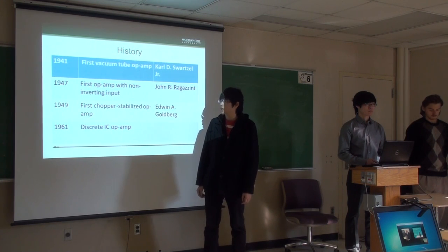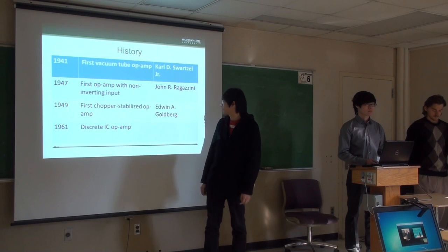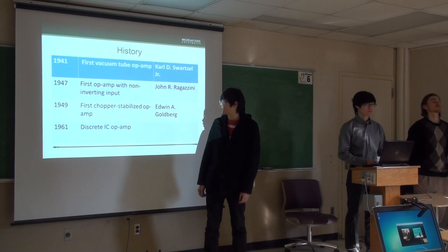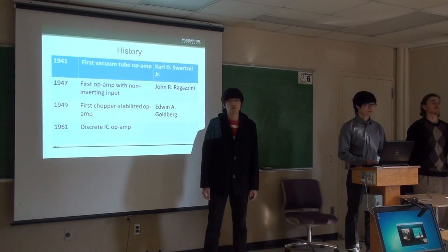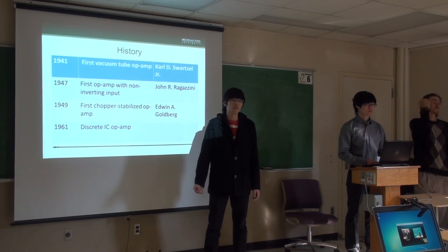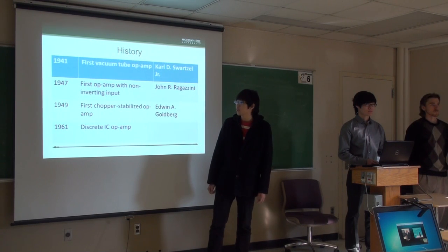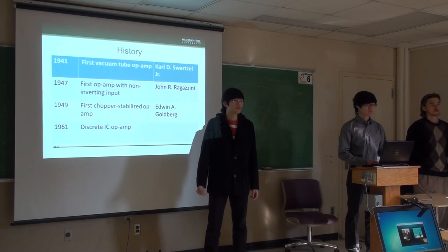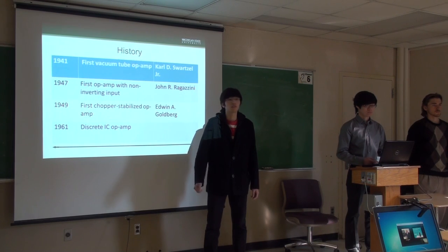The first chopper-stabilized op-amp, designed by Edwin Goldberg, came out in 1949. A chopper-stabilized op-amp consists of a general op-amp and an AC amplifier. The chopper gets an AC signal by switching DC to ground at a very fast rate. The AC signal is then amplified, rectified, and filtered, and fed back into the non-inverting input of the op-amp. This improved the gain and significantly reduced DC drift.